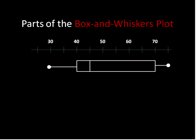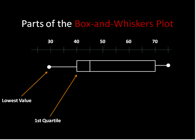Here is the box and whisker plot and its parts. First off, this is the lowest value, a little less than 30 — we're going to call that 30 since the dots are a little off. That is the lowest value. The first quartile is marked by this upright line; in this case it would be 40.